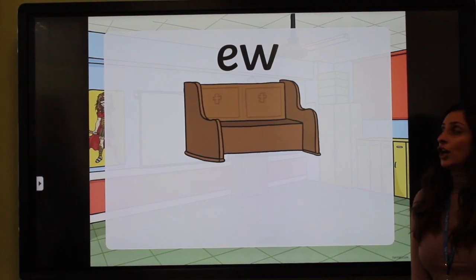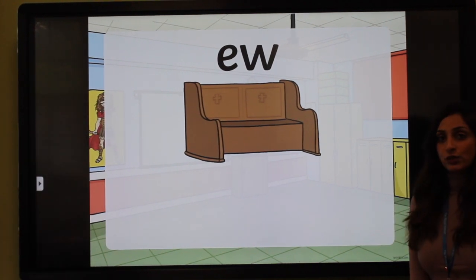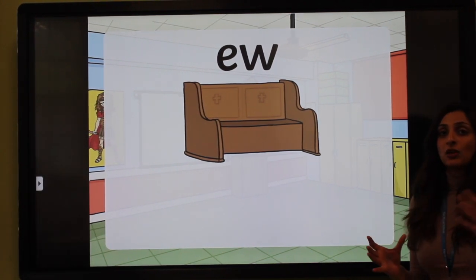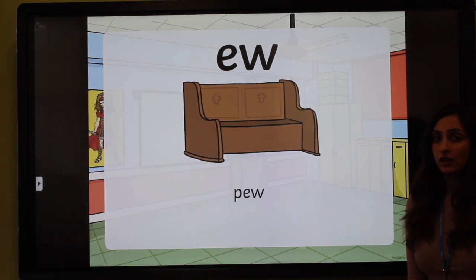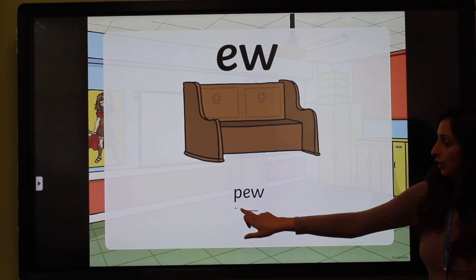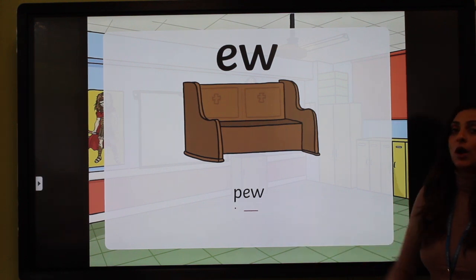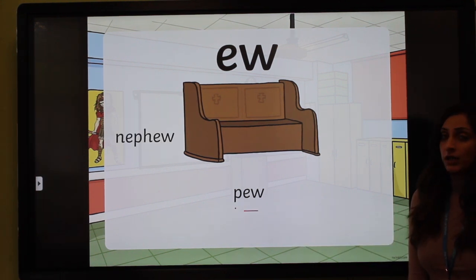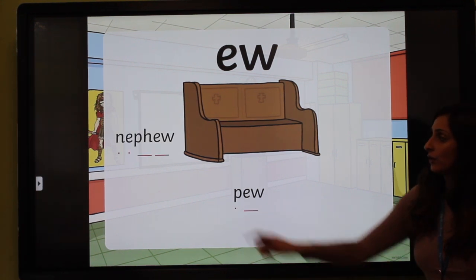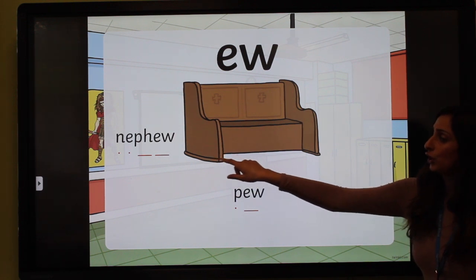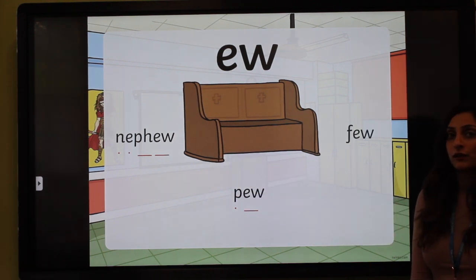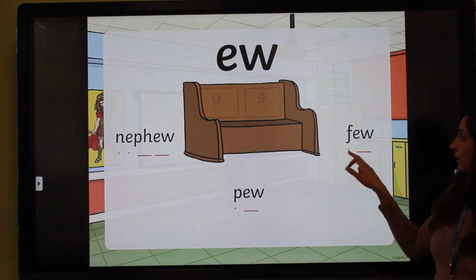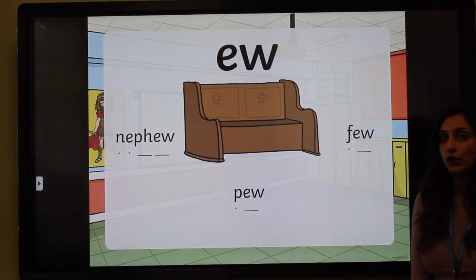This is the U sound, where an E and a W come together to make the U sound, like in the word pew — p-ew, pew — the word nephew — n-e-f-f-u, nephew — and the word few — f-u, few.